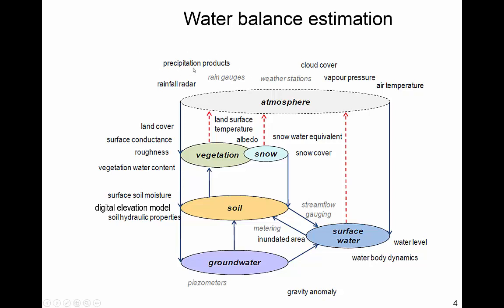We talked in previous videos about precipitation — we can measure that with rain gauges, shown here in gray, but with satellites we can also measure it using rainfall radar, cloud cover, vapor pressure, and air temperature. On the vegetation side, we can measure properties such as leaf area index, surface roughness — important for wind effects on evapotranspiration — and albedo. We can see where snow is and estimate how much snow there is up to a point. Going further down, we can look at soil moisture at the surface and use digital elevation models, and to some extent we can infer soil hydraulic properties.